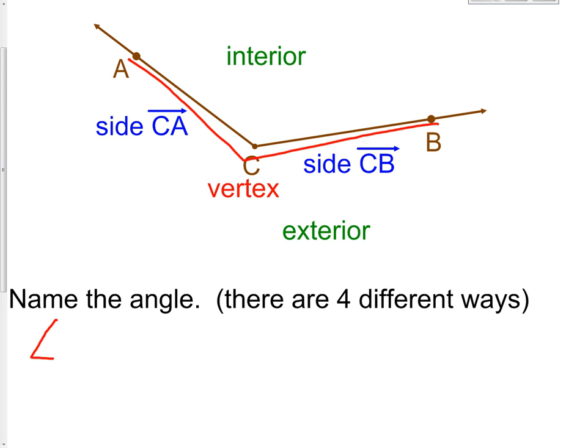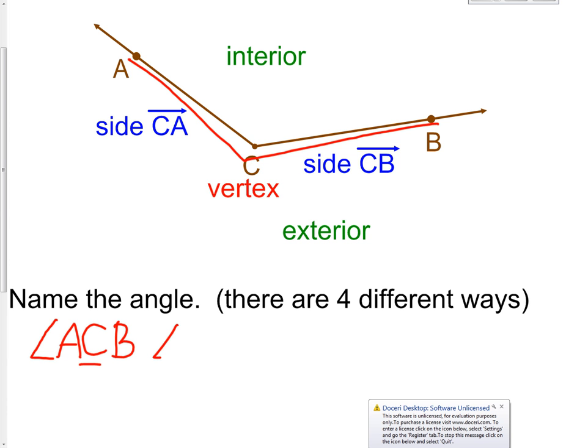Notice I started at A, I next went to C, and I ended at B. C is our vertex, and whenever we use the three letters to name an angle, C, or the vertex, will always be in the middle. I also could have called this angle BCA. Notice C, once again, is in the middle.